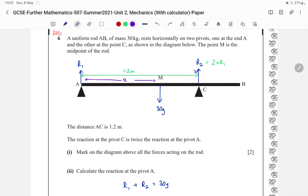In all of these moments questions, we are going to have downwards and upwards forces. The downwards and upwards forces must be equal, but that's for later on. The distance AC is 1.2 meters. So I've just drawn that in there.